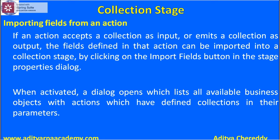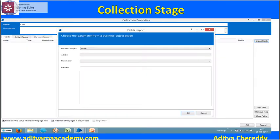When activated, a dialog opens which lists all available business objects with actions that you have defined in the collection parameters. Whenever you press the 'Import Fields' button, the fields import window will open, and you can see the business object and the action parameter.